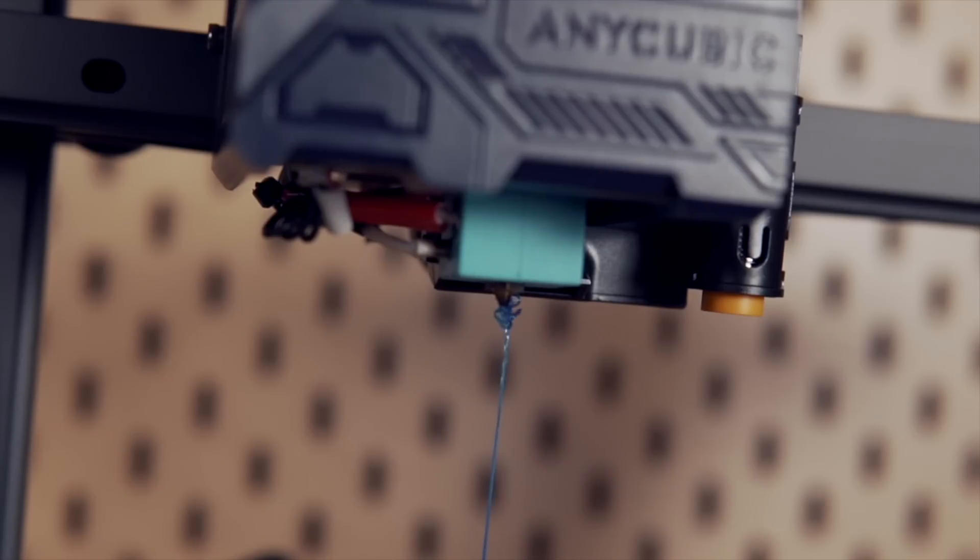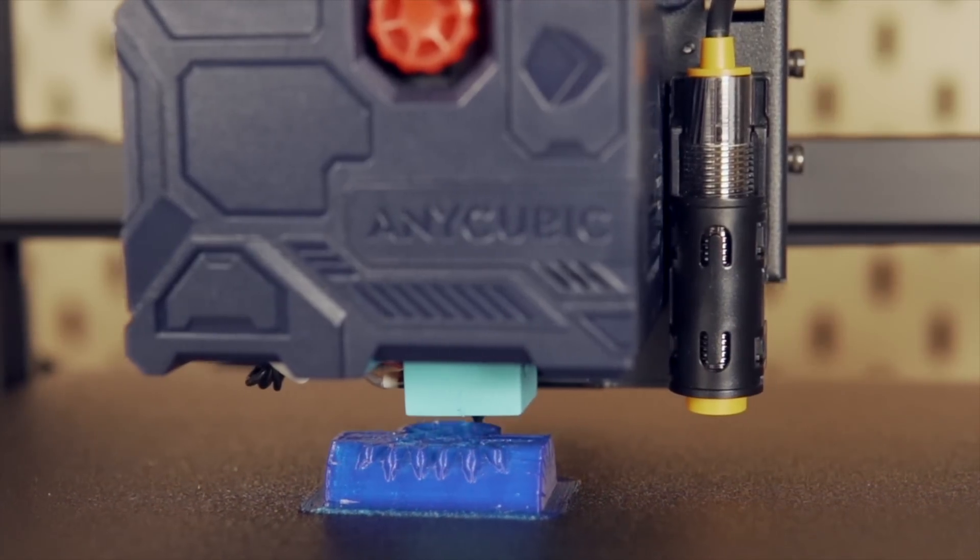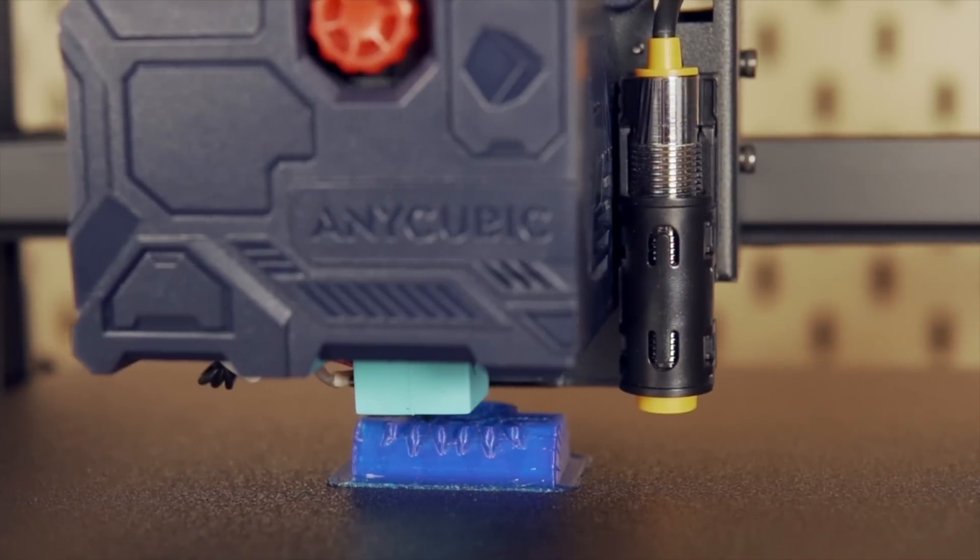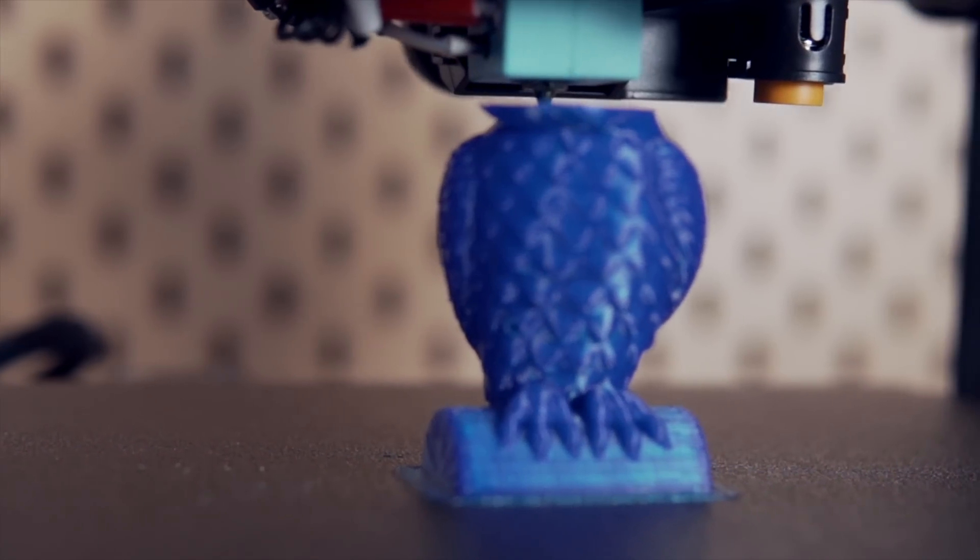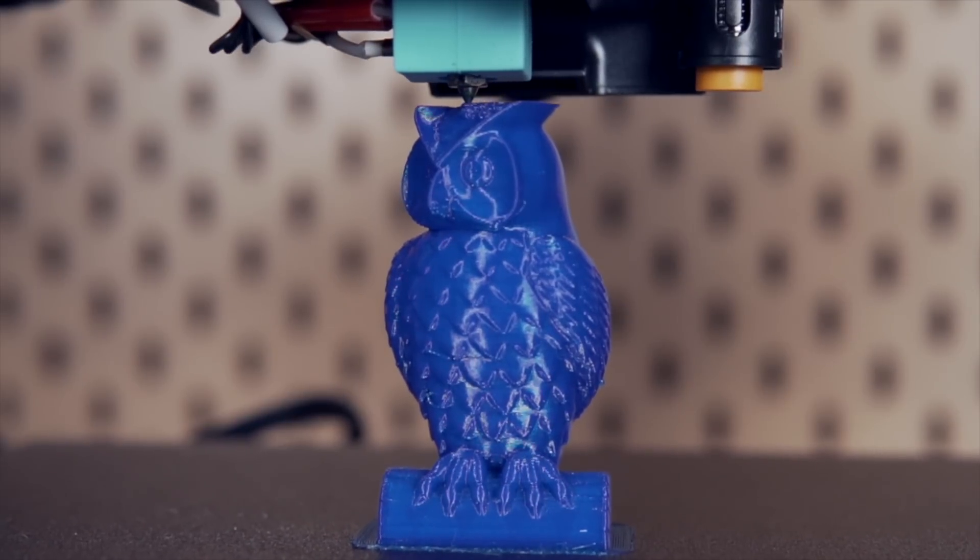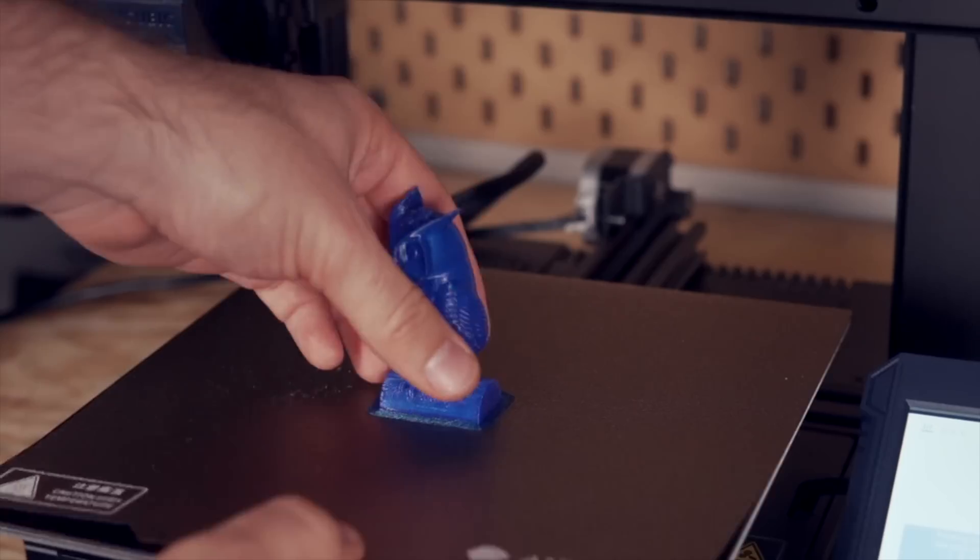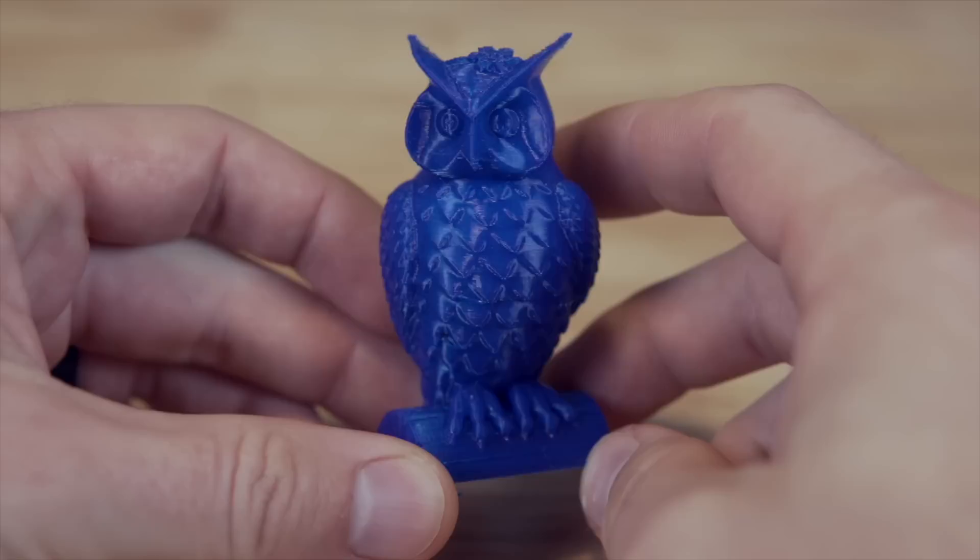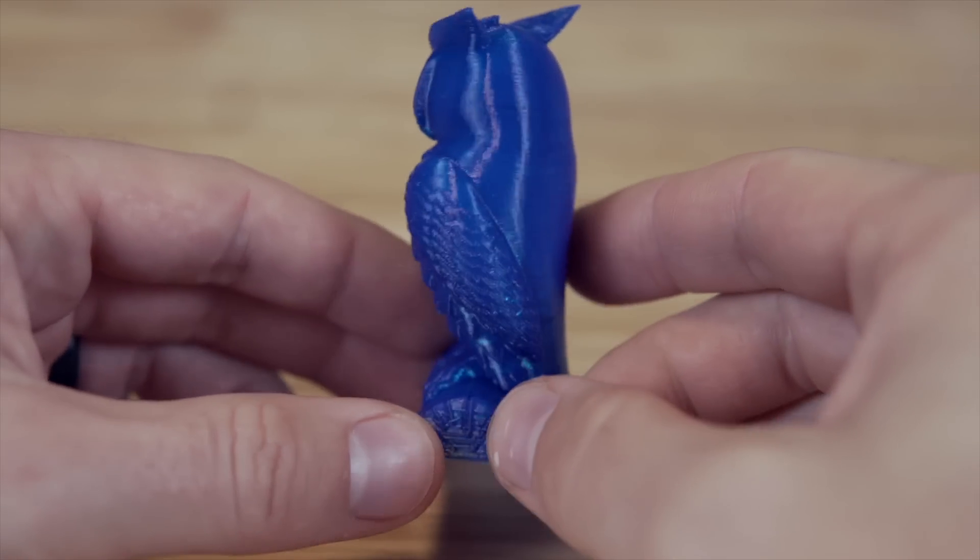Once done with the leveling and the Z offset, I loaded in some blue PLA and fired off the test print that came on the microSD card, which is the Anycubic Owl model that they've had on their printers for many years. The Cobra is definitely on the quieter side, which is a plus, at least in my opinion, and I was very pleased with the print result or the print quality of their first test print.